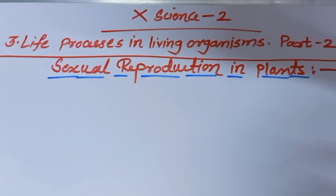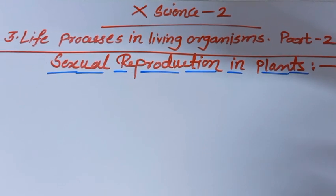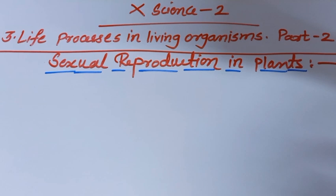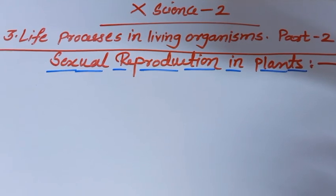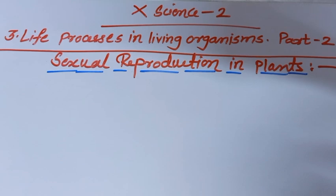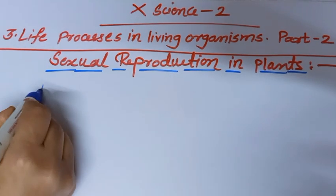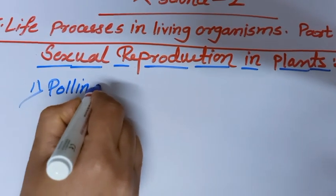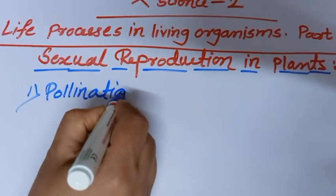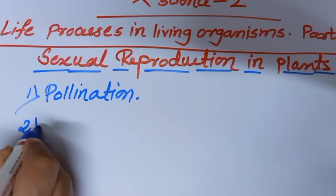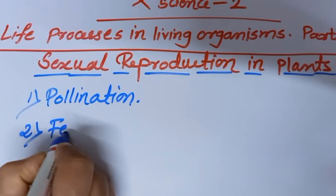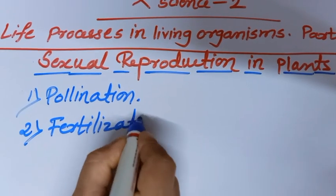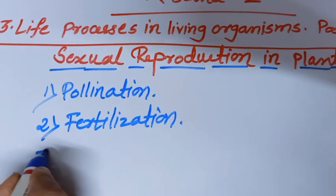Assalamualaikum warahmatullahi wabarakatuh. Dear students, we will see sexual reproduction in plants. In sexual reproduction in plants, there are 3 main steps: number 1 is pollination, number 2 is fertilization, and the third one is germination.